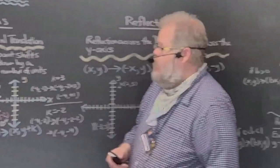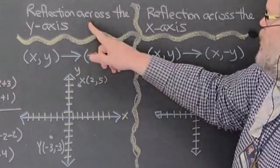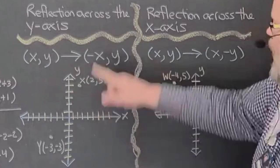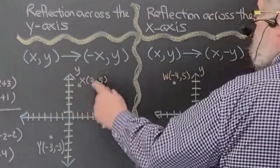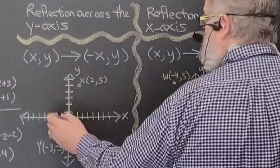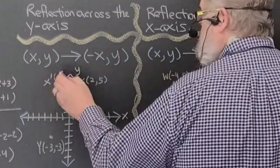Now let's talk about reflections. First, reflections across the y-axis: you take the ordered pair (x, y) and change the sign of the x value only. Here's two comma five — if I change the sign of x from two to negative two, the point moves to negative two comma five. That's X prime, a reflection across the y-axis.